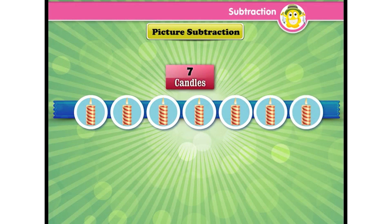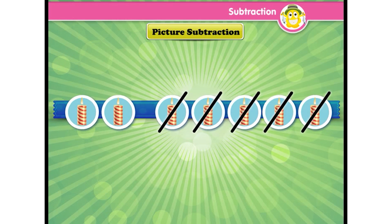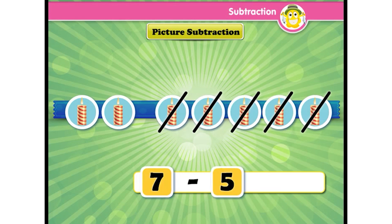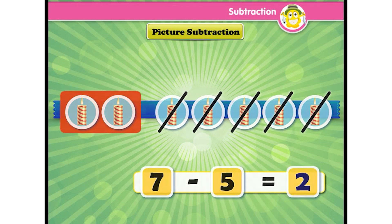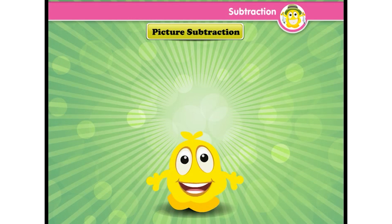Now here are seven candles. Let's subtract five from seven. Take away five or cross five out, and the difference is the answer — seven minus five is two. Also, subtracting zero from any number gives the same number, as zero has no value.